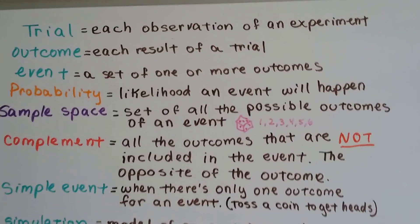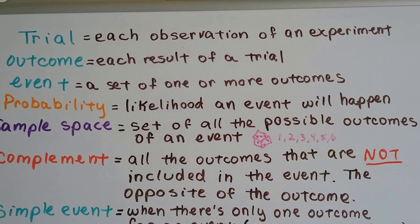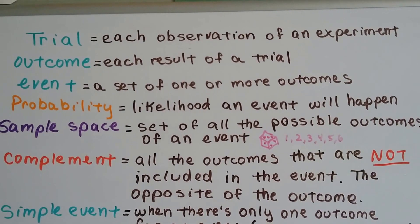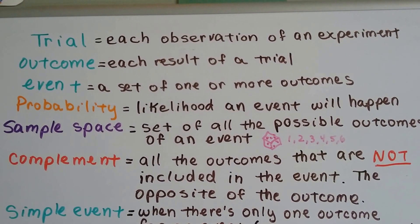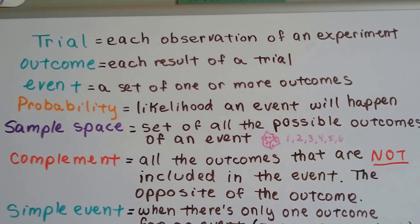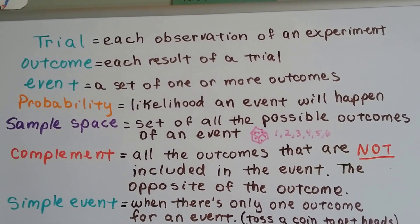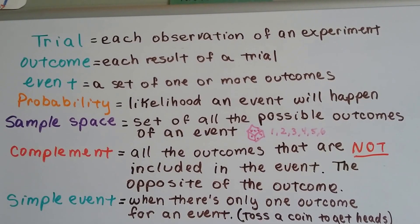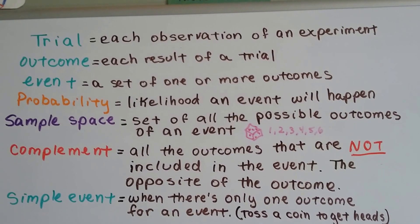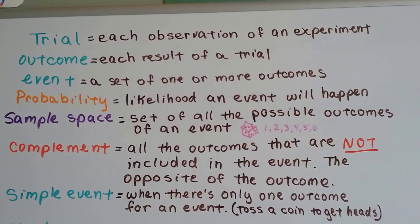A trial is each observation of an experiment. So if you were going to flip a coin, each time you watched the coin flip would be a trial. The outcome is the result of the trial. Was it heads or tails? An event is a set of one or more outcomes. So an event would be flipping the coin three times to see which one landed the most.